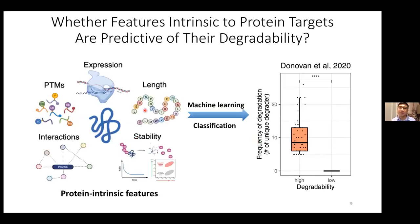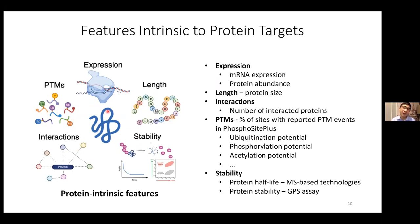To test this hypothesis, we collected features intrinsic to protein targets — spanning protein expression, protein length, post-translational modifications, protein-protein interaction, and protein stability — all built from publicly available datasets. Expression features include mRNA level and protein abundance. Protein length indicates protein size. For protein-protein interactions, we estimated the number of interacting proteins for each protein, reflecting the potential of a protein being part of a complex in the cell.